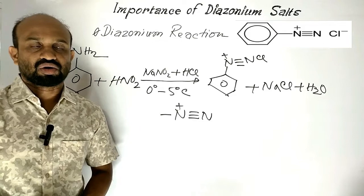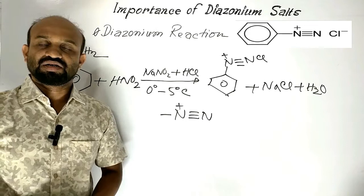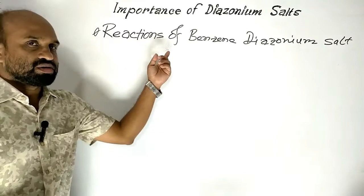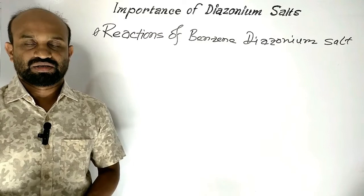Benzene diazonium salt is an important compound. It is used to prepare various types of colored dyes, which is why there is much importance of benzene diazonium salt. Now let's see the reactions of benzene diazonium salt. Here we will learn the Sandmeyer reaction and the Gattermann reaction.